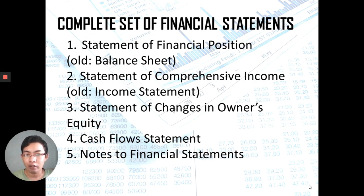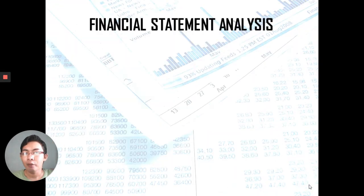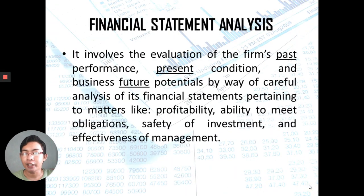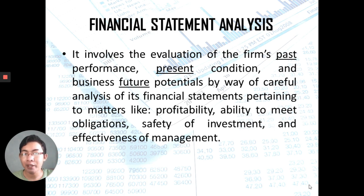When you present the complete set of Financial Statements to decision makers, the arrangement is: Statement of Financial Position, then Comprehensive Income, then Changes in Equity, then Cash Flow, and lastly the Notes. Financial Statement Analysis involves the evaluation of the firm's past performance, present condition, and business future potentials by way of careful analysis of its financial statements — pertaining to matters like profitability, ability to meet obligations, safety of investment, and effectiveness of management. In short, all information from the past is used to evaluate what is happening right now and to project the company's future potential.